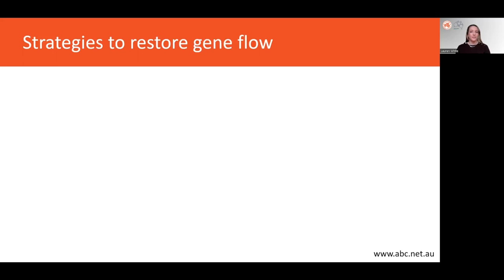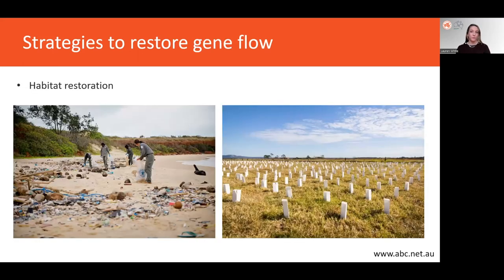There's a variety of ways that gene flow between populations can be restored. For example, just by restoring critical habitat. This refers to the process of reviving or improving ecosystems that have been damaged, degraded or destroyed. It involves activities like removing pollutants and invasive species and reintroducing native plants and animals, restoring natural waterways and improving soil health. This can enhance gene flow by connecting populations that are separated by a barrier and promoting population growth and expansion into previously unoccupied areas.